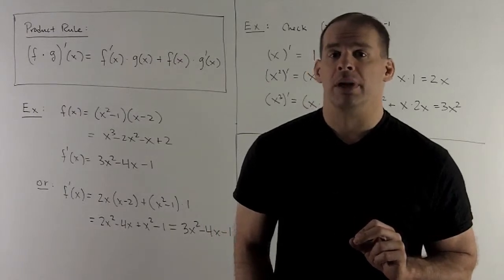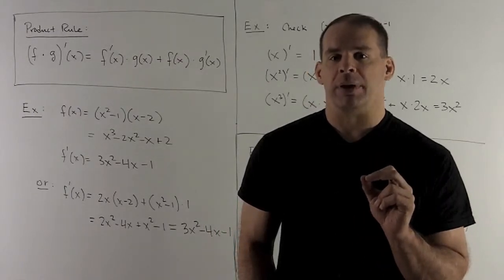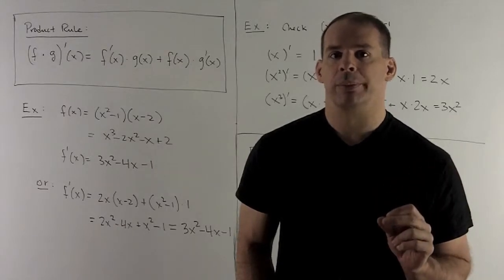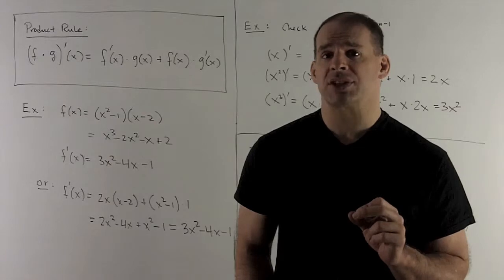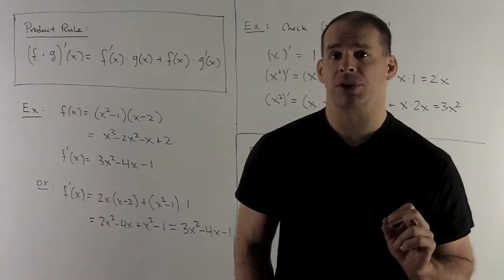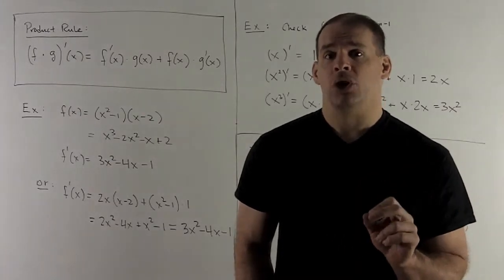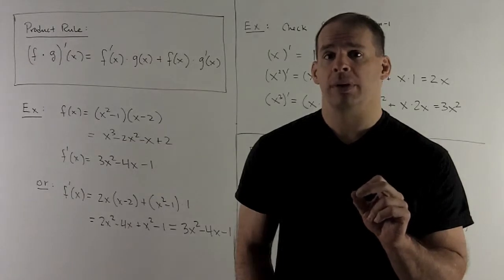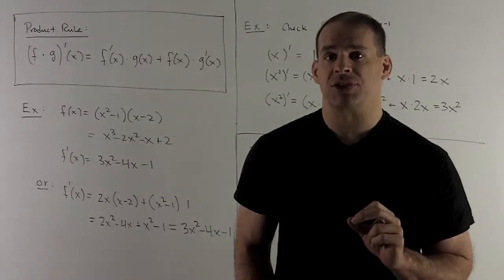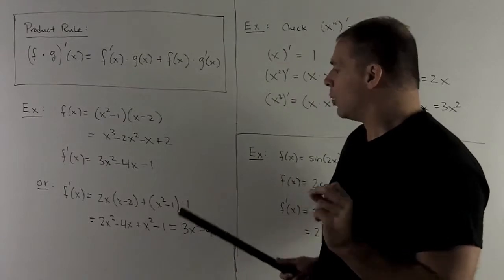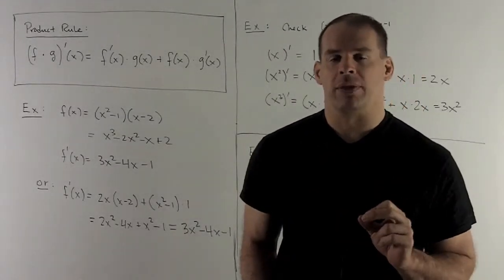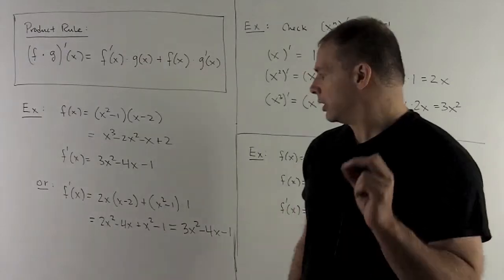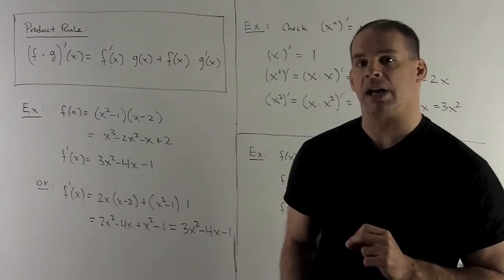We can also do it using the product rule. I have (x² - 1)(x - 2), so I take derivative of the first: derivative of x² - 1 is 2x. We multiply that by (x - 2), and then I'm going to add: leave the (x² - 1) alone and multiply by the derivative of (x - 2), which is just 1. When I collect all our terms together, you notice we're just going to wind up with the answer we got originally: 3x² - 4x - 1.